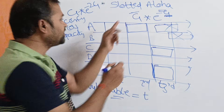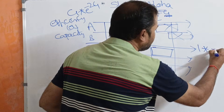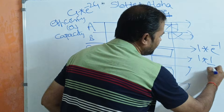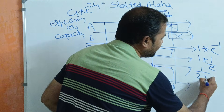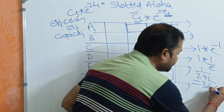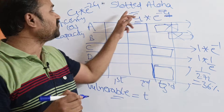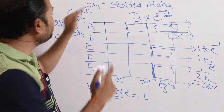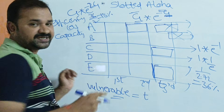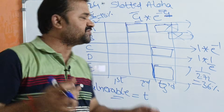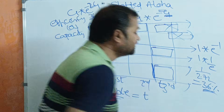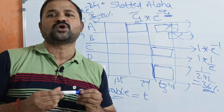When G = 1, the efficiency is 1 × e^(−1) = 1/e. Since e ≈ 2.72, we get 1/2.72 ≈ 36%. So the efficiency of slotted ALOHA is 36%, whereas for pure ALOHA, the factor of 2 in the exponent gives efficiency of approximately 18%. This is the key improvement of slotted ALOHA over pure ALOHA.